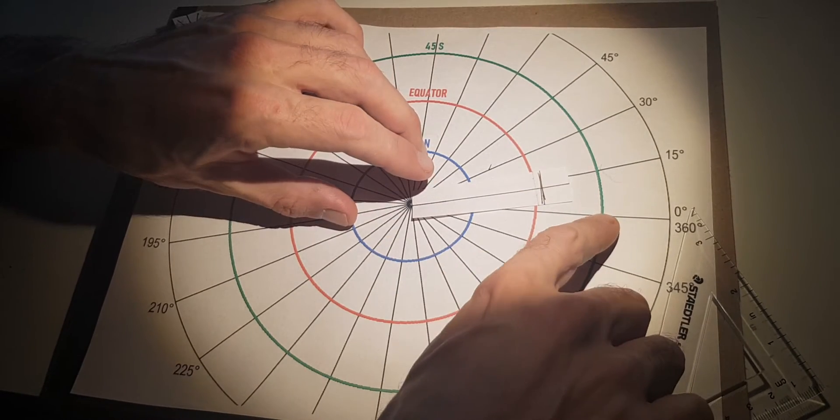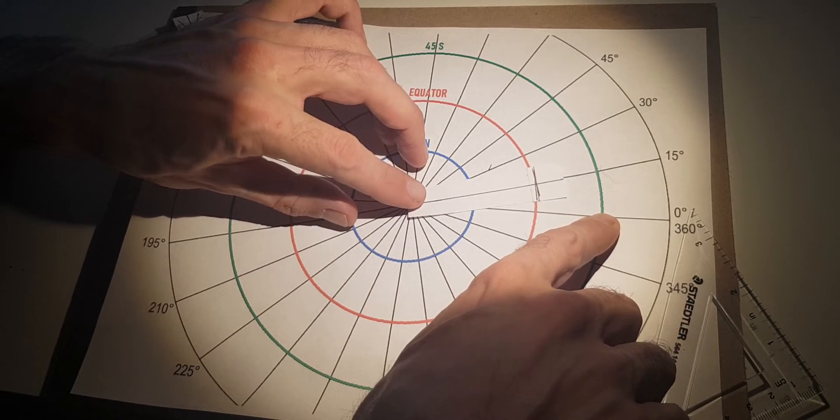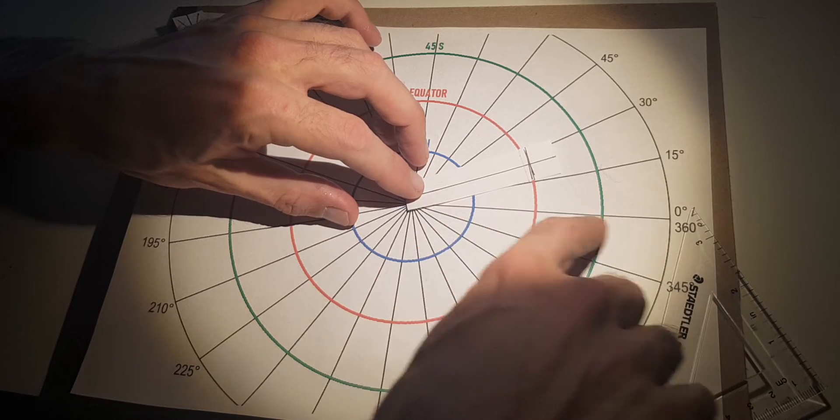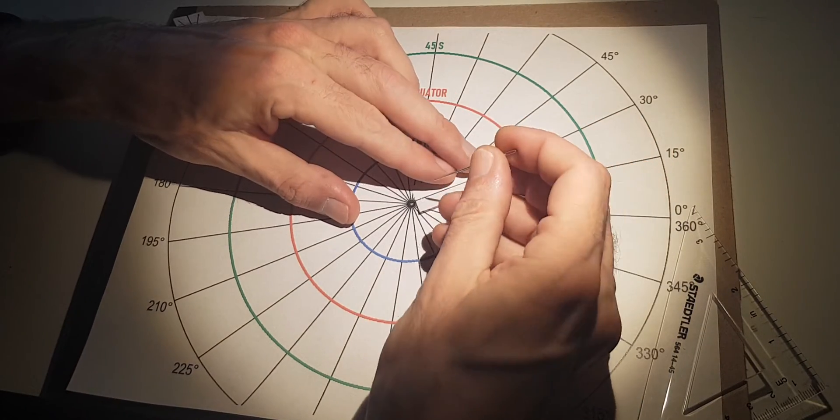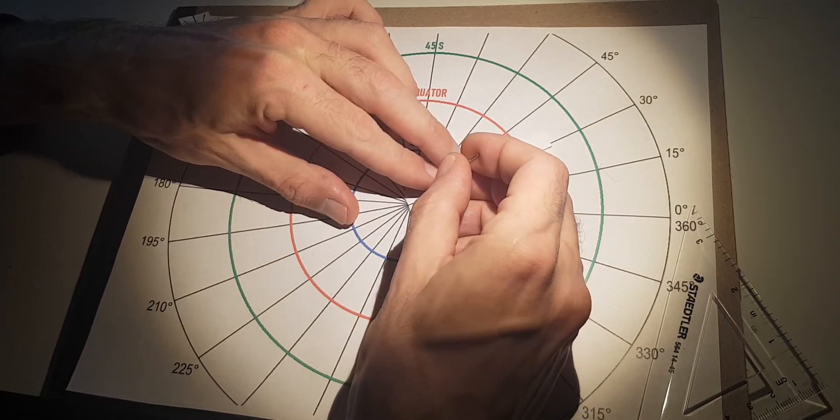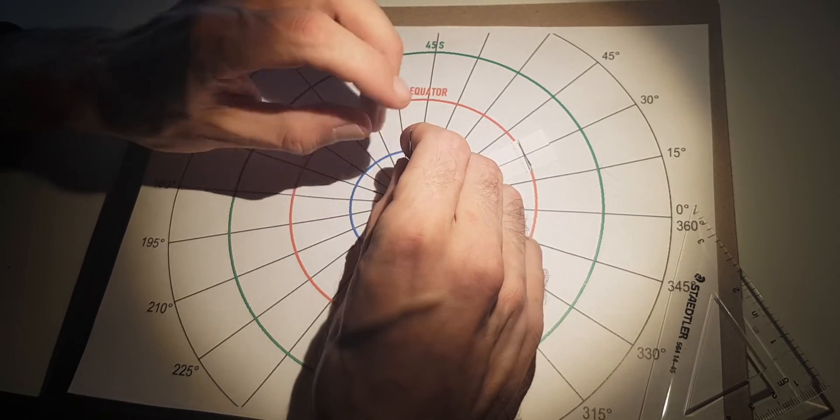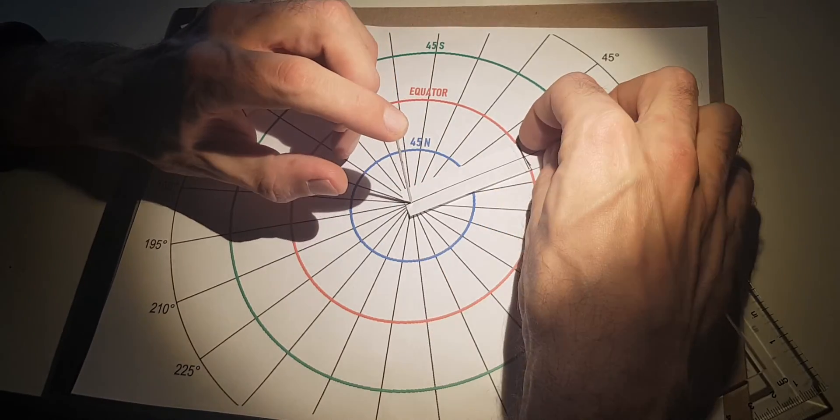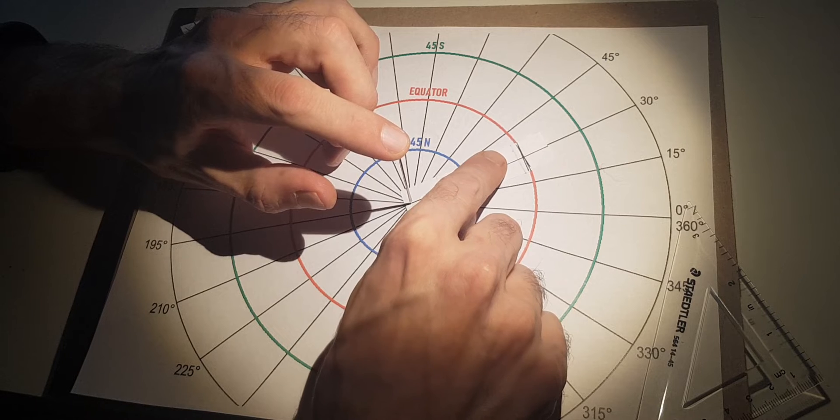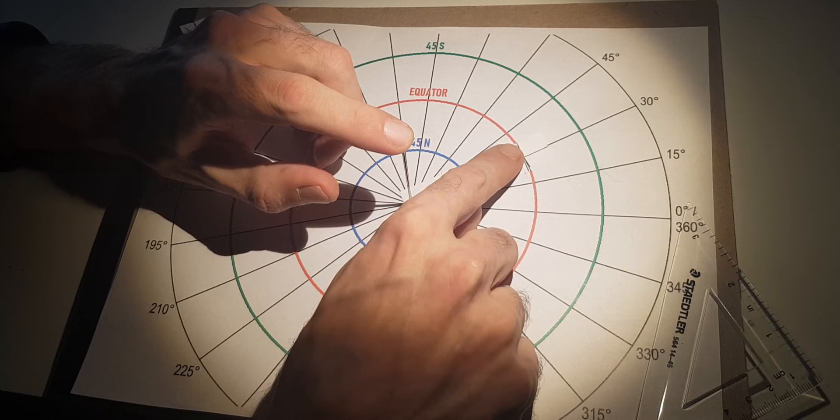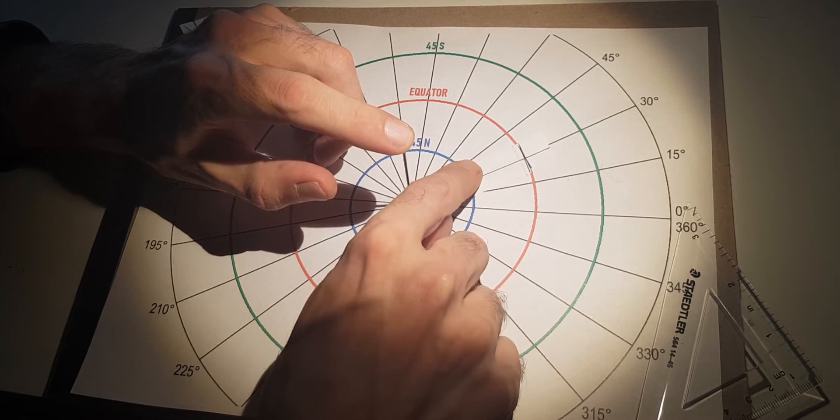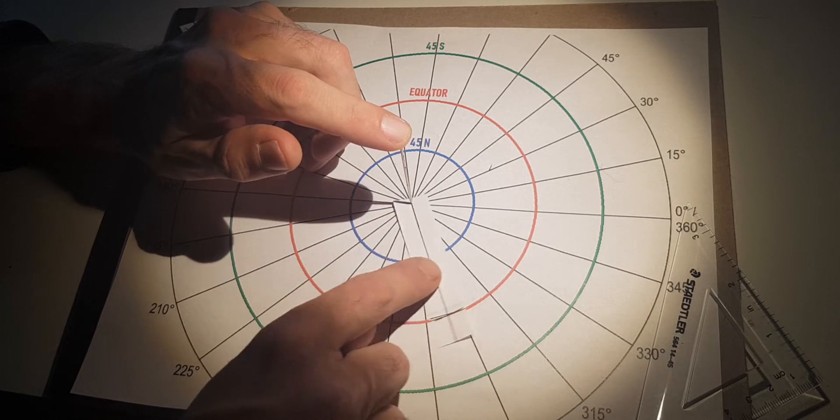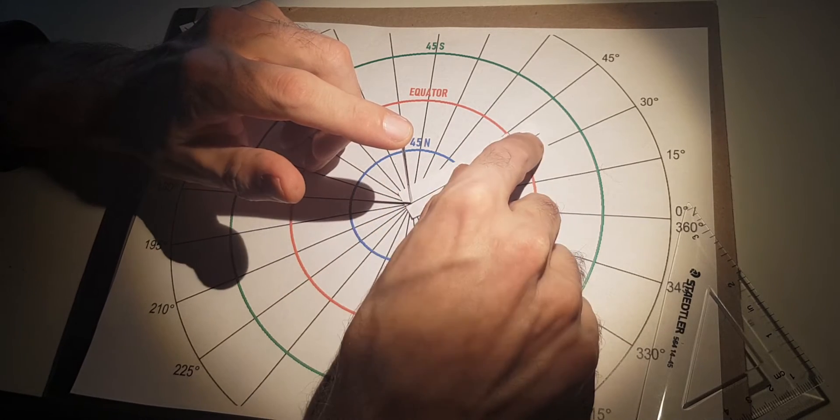So our next one will be taken from out here at 45 degrees south. On our longitude line. Now it can be taken at any latitude line. It doesn't have to be 45 degrees north or 45 degrees south. Now, as you can see, the lines are kind of all garbled up right here. And I'll show you why in a second.